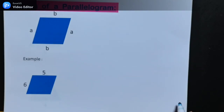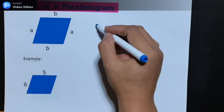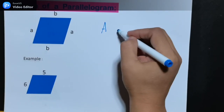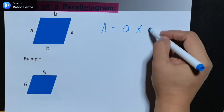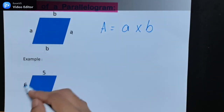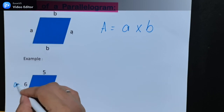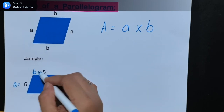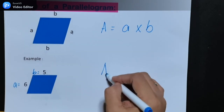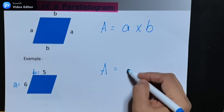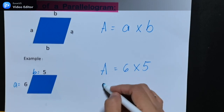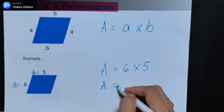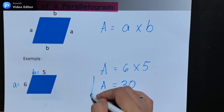Area of a parallelogram is the same as the area of a rectangle. So the area is A times B. Given A = 6 and B = 5, the area is 6 times 5. The area of the parallelogram is 30.